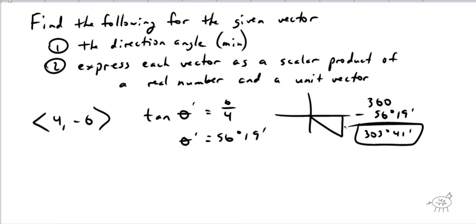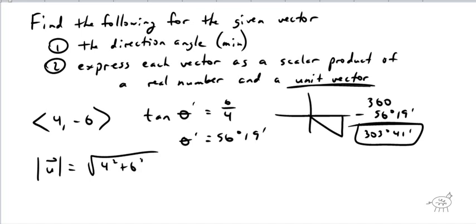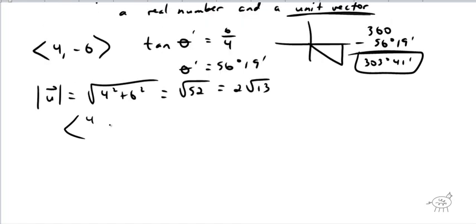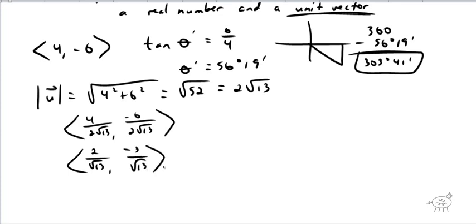Now, express the vector as a scalar product of a real number and a unit vector. We need to find the unit vector, so find the magnitude: square root of 4² plus 6², which gives the square root of 52, which is 2√13. Then divide each component: 4 over 2√13 and -6 over 2√13. Simplify first — that's 2 over √13, and -3 over √13. Then rationalize by multiplying by √13 over √13, giving 2√13 over 13, comma -3√13 over 13.